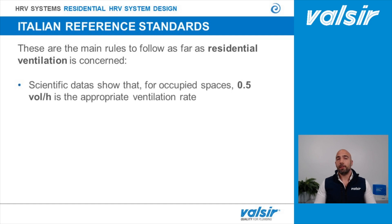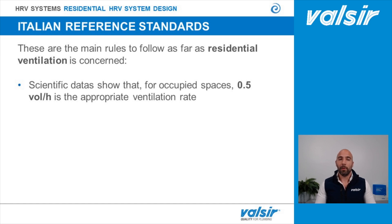We've already seen that scientific data related to a person's health say that the appropriate ratio for ventilation is 0.5 volume per hour. That means that every hour we ideally should change half of the air volume inside our indoor environment. But there are some regulations, both Italian and international, that may help us with more specific suggestions when it comes to designing an HRV system.